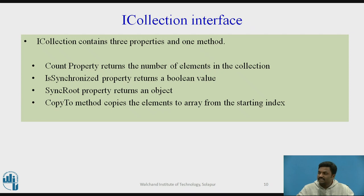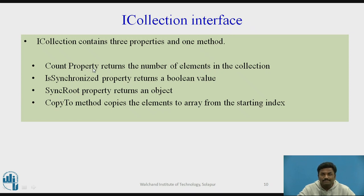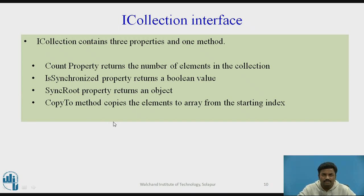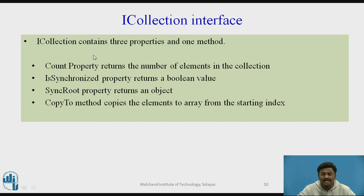Next is the ICollection interface, which contains three properties and one method. The Count property returns the number of elements in the collection. The IsSynchronized property returns a Boolean value indicating whether it is synchronized — useful in the case of threading. The SyncRoot property returns an object rather than a Boolean value. The CopyTo method copies elements to an array from a starting index, allowing you to copy from one collection to another.